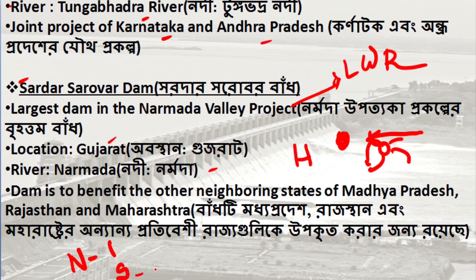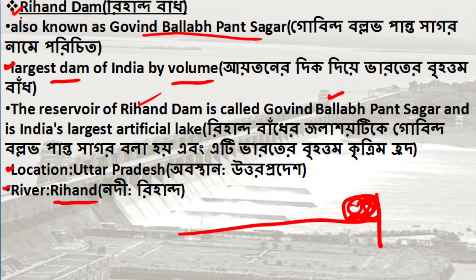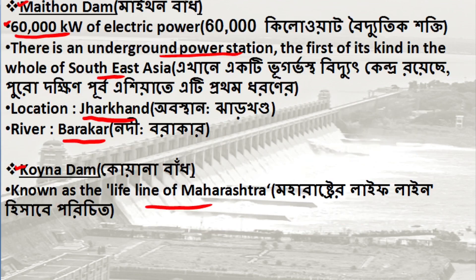Sardar Sarovar Dam is the largest dam by length, located in Gujarat. Rihand Dam is the largest dam in India by volume. Govind Ballabh Pant Sagar reservoir is associated with Rihand Dam, located in Uttar Pradesh.